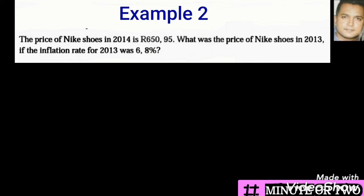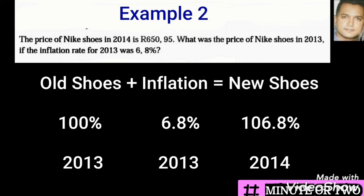We need to remember that the new price already has the increase of 6.8% in it. So all we need to do is take out this amount and we would arrive at the old price required by the question. In 2013, the old price is the 100% amount. We added the inflation in 2013 to arrive at the 2014 figure, which is the price of the new shoes.